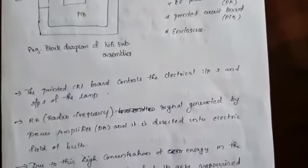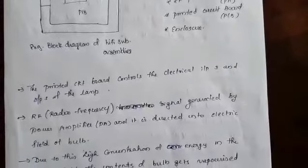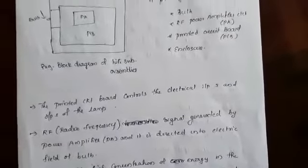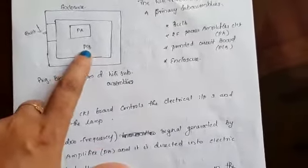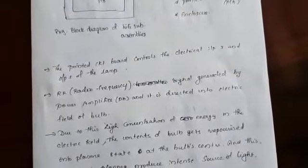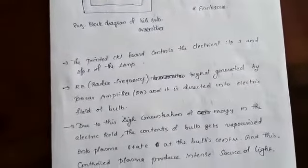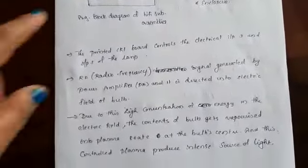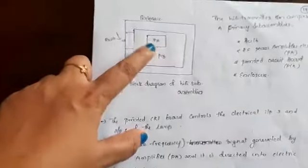The printed circuit board controls all the electrical inputs and outputs of the lamp. The RF radio frequency signal is generated by the power amplifier. This is the power amplifier.